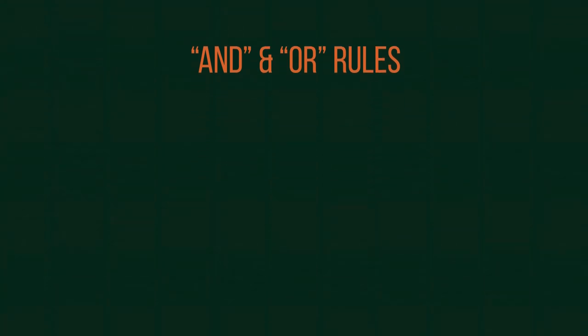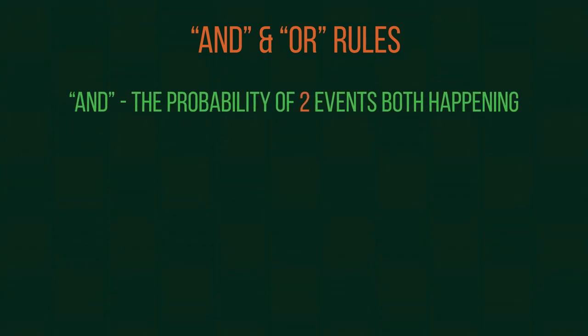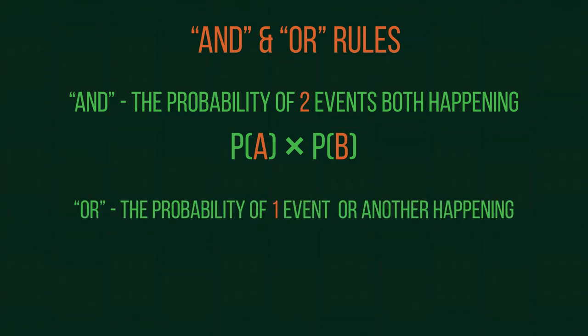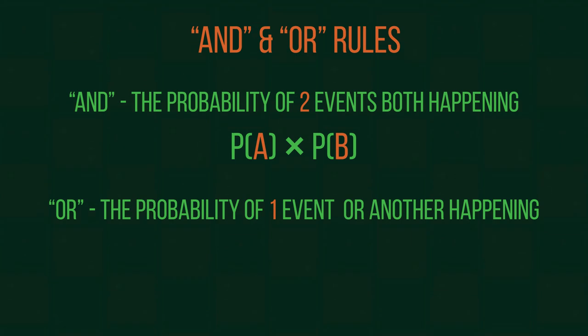If you want the probability of two events both happening, event A and event B, you multiply the probabilities together. If you want to find the probability of one event or another event happening, but not necessarily both, you would add the values together.